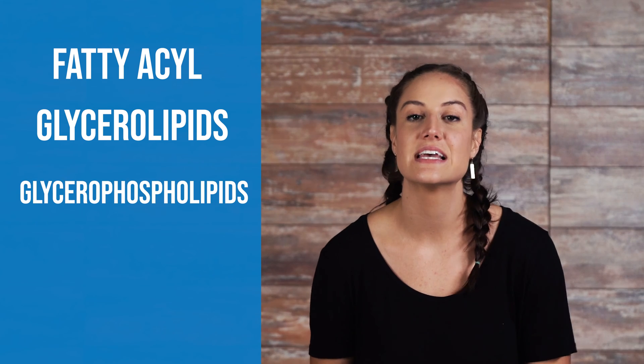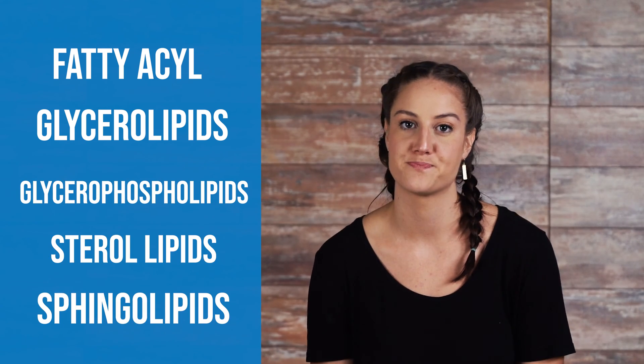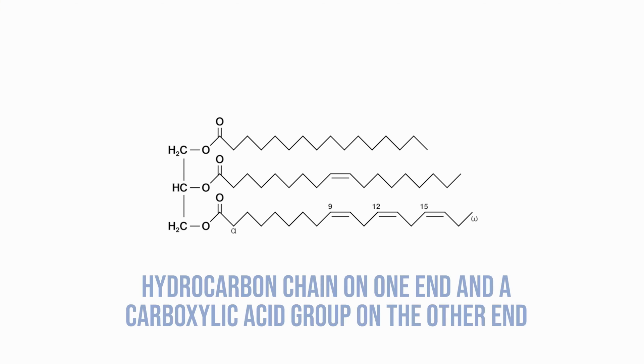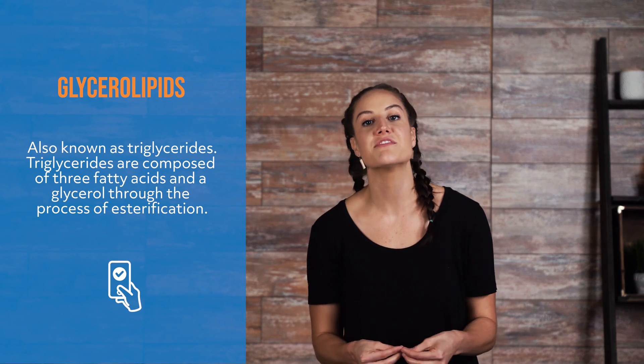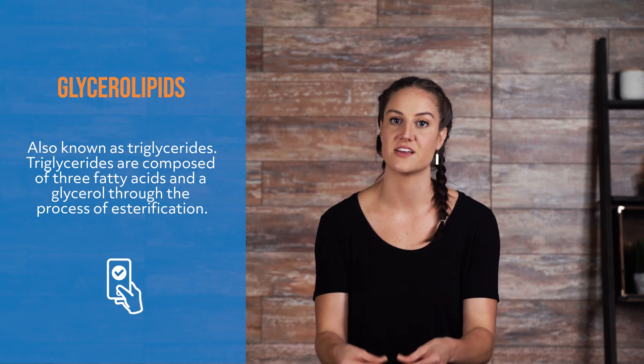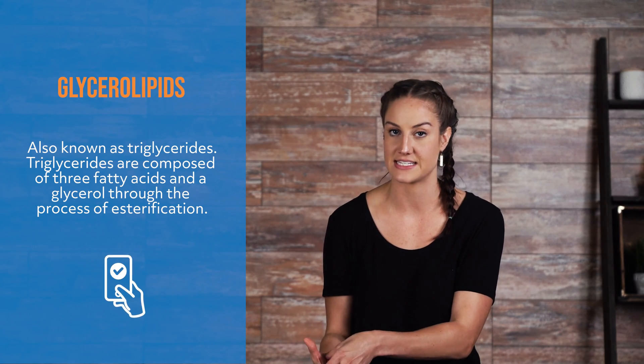Lipids, or fats, are characterized by their insolubility in water. There are five main classifications of lipids: fatty acyl, glycerolipids, glycerophospholipids, sterolipids, and sphingolipids. Fatty acyl refers to fatty acids and their byproducts. It is made up of a hydrocarbon chain on one end and a carboxylic acid group on the other. The hydrocarbon chain is nonpolar and hydrophobic, meaning water-fearing. The end containing the carboxylic acid group is polar and hydrophilic, meaning water-loving. Glycerolipids are also known as triglycerides, composed of three fatty acids and a glycerol through esterification — the reaction of carbolic acids and alcohols.